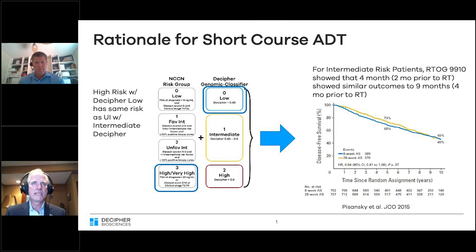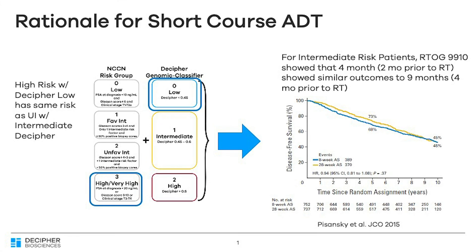He really didn't have T3 disease — it was more like unfavorable intermediate risk with a low Decipher. Looking at data from RTOG 9910 from Dr. Bozansky, we felt that four months of androgen deprivation therapy would be sufficient for this gentleman's disease.